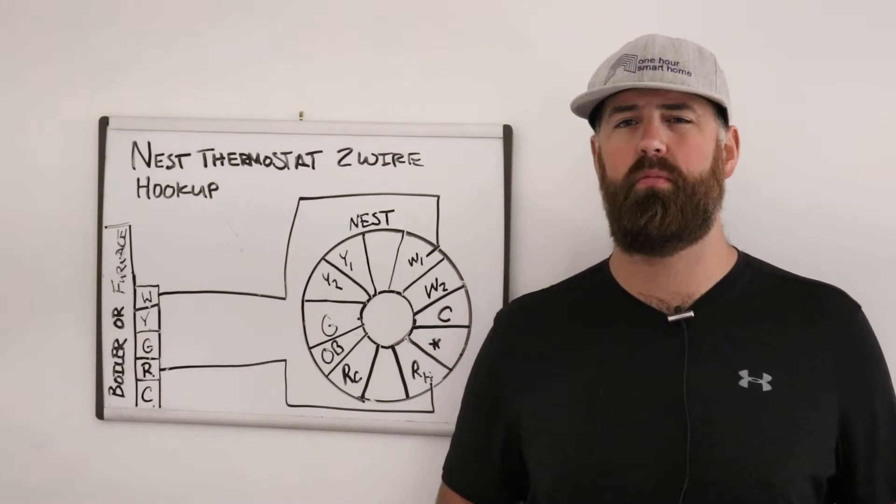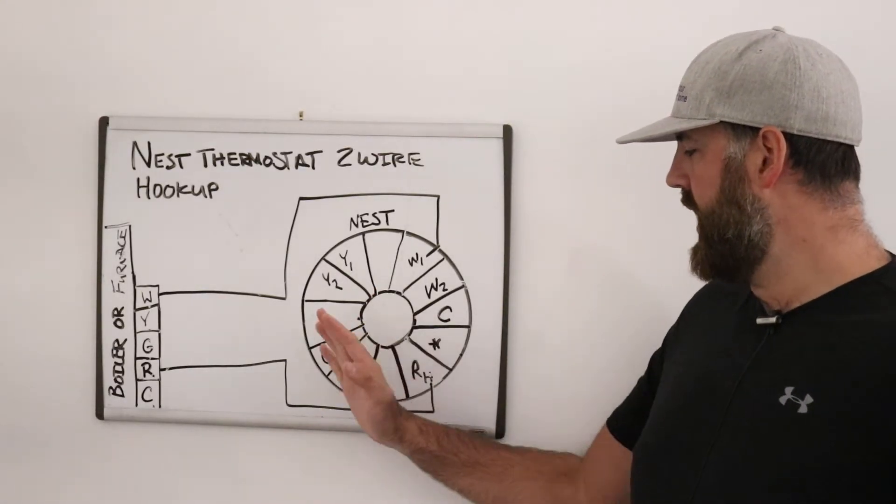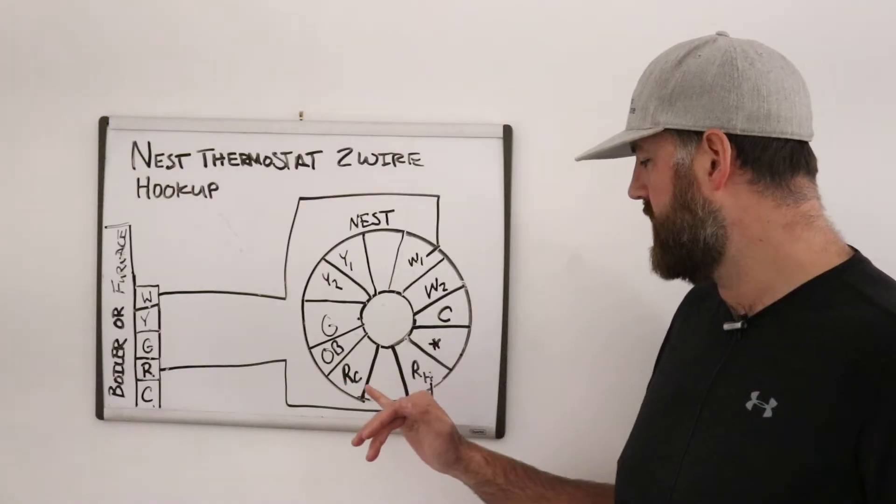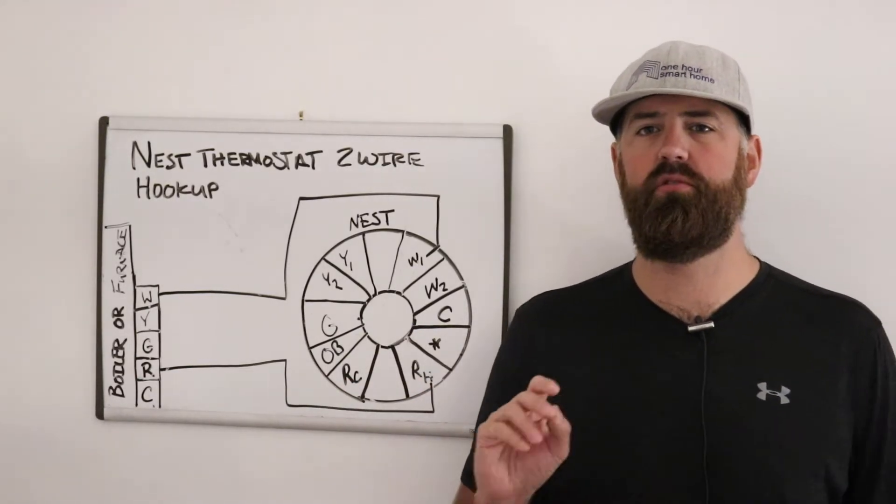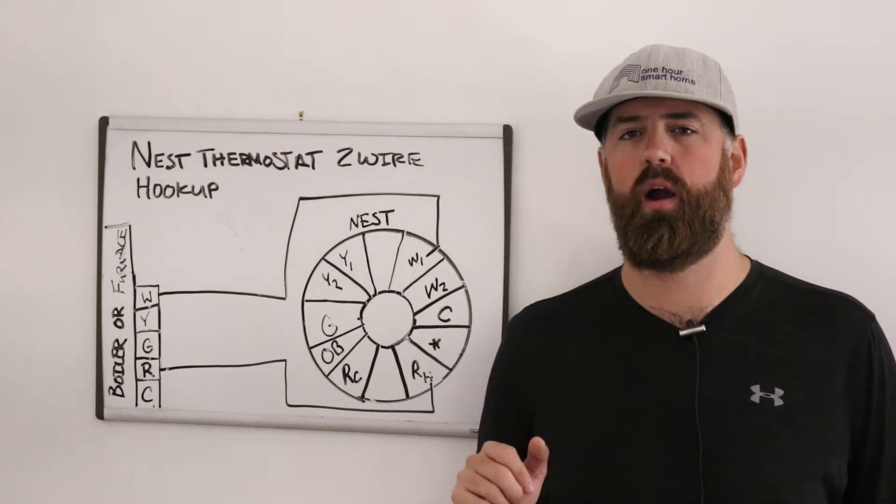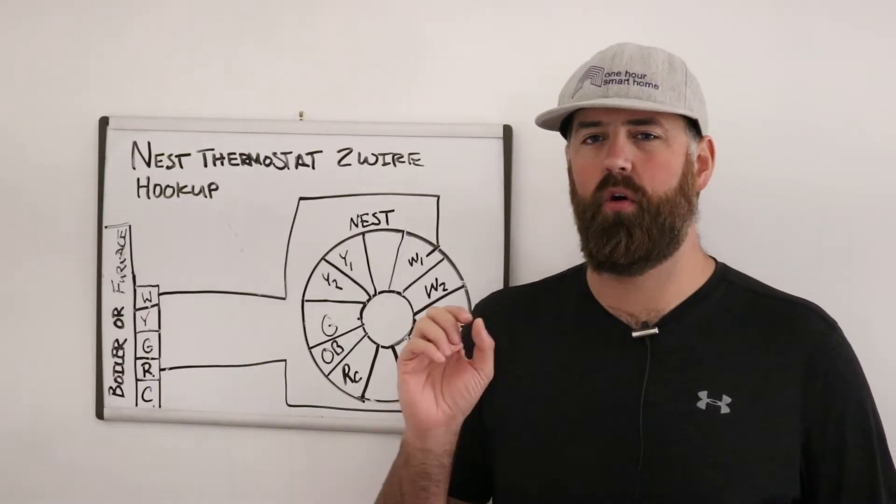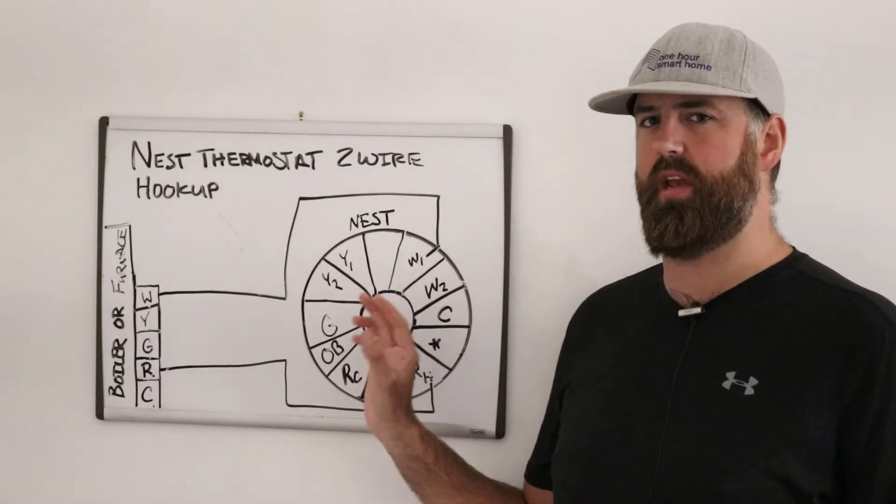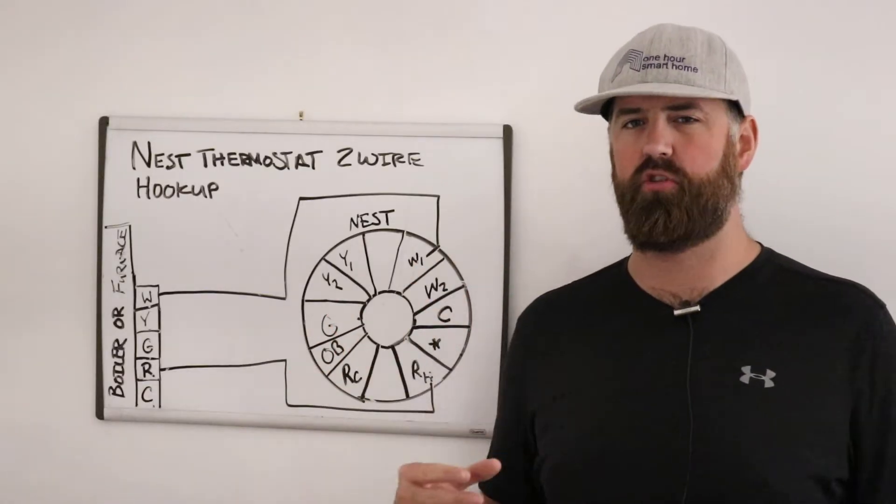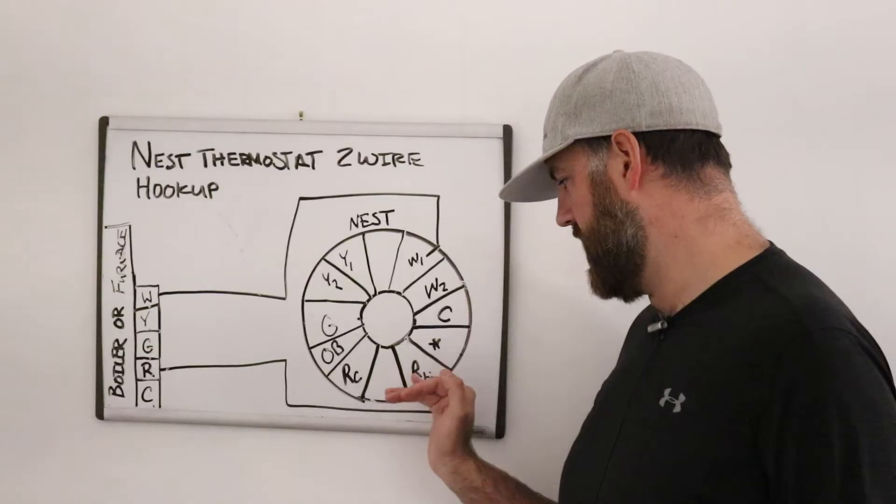Now a lot of you are probably going to have an old thermostat which may have had RC and RH and a jumper wire between them. On the nest you do not need to have a jumper wire between RC or RH. That is only for your old style thermostat. That jumper wire is done internally in the nest like in its circuitry. So there is no actual need for a physical jumper wire on RC and RH.